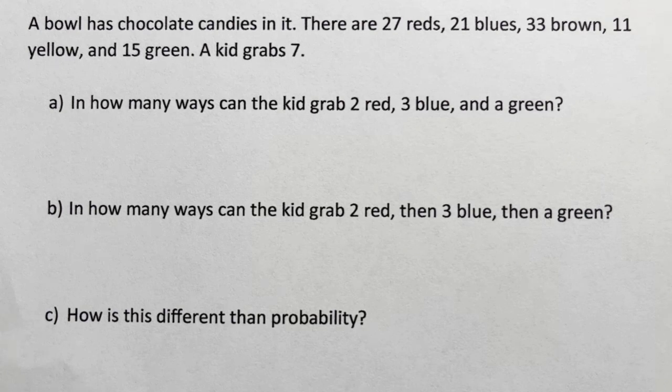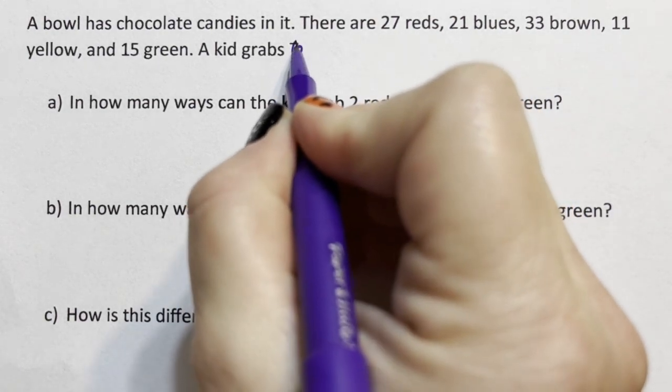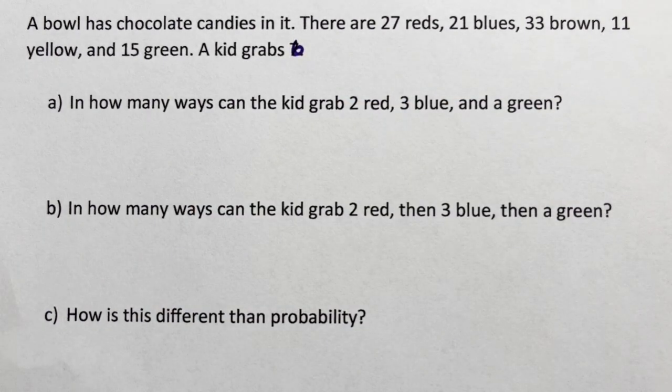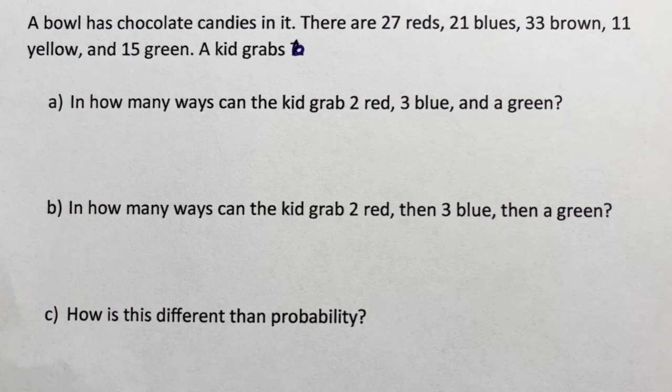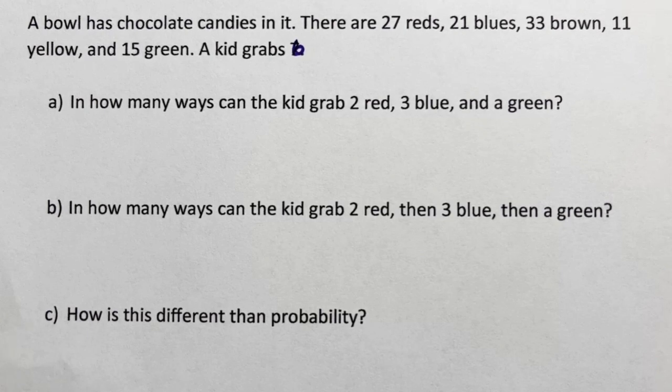A bowl has chocolate candies in it. There are 27 red, 21 blue, 33 brown, 11 yellow, 15 green. A kid grabs six candies and runs off to eat before their parent notices that they are stealing candies from the bowl.